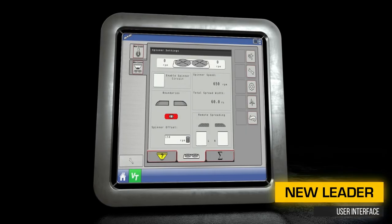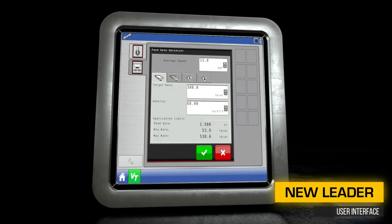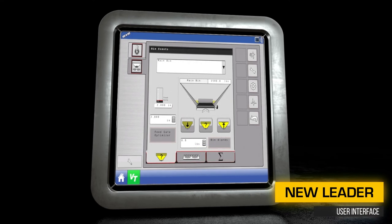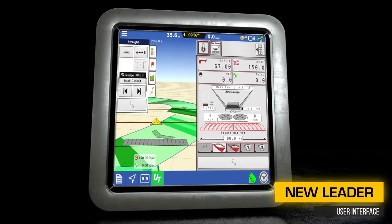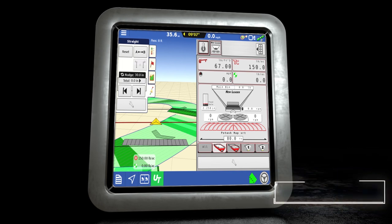The interface includes other features like boundary spreading, a feedgate optimizer, low-bin countdown, and automatic chain oiler. The system can also be expanded to control multiple bins and other functions.